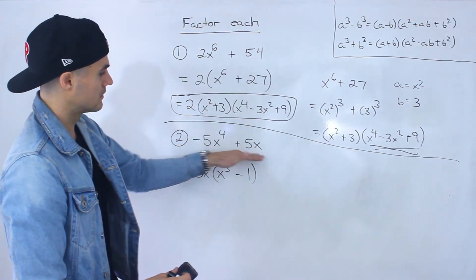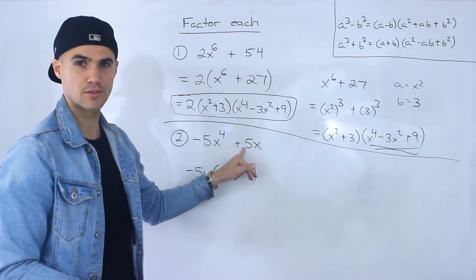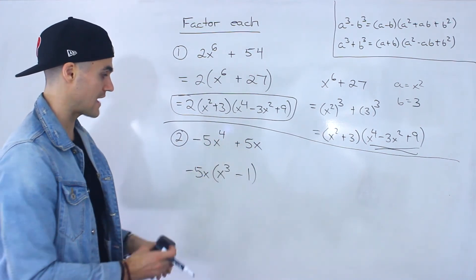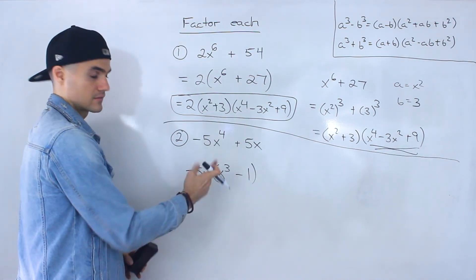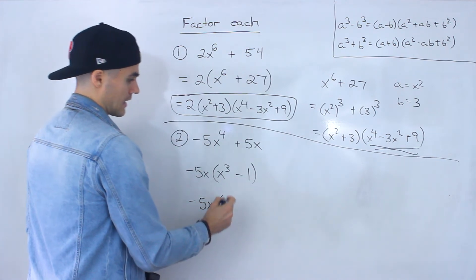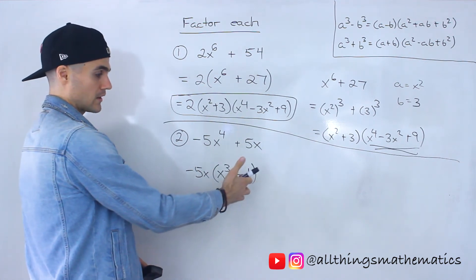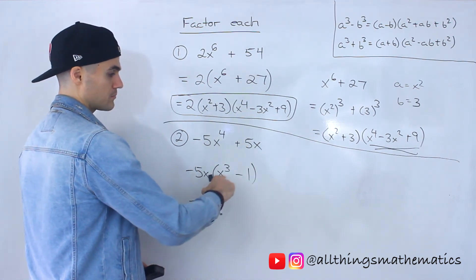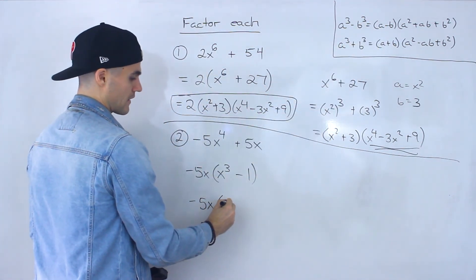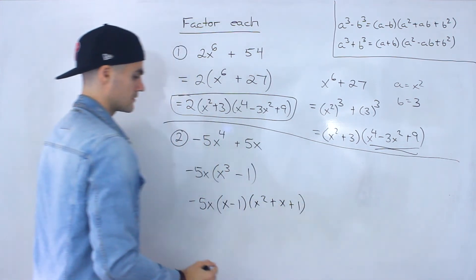So notice from here, we couldn't really take this and write it in these formats because we can't take the third root of 5. But notice when we do factor out the 5 and we factor out one of the x's, we end up having a difference of cubes. So we'd end up with negative 5x. And then this here, the a value would be x, the b value would be 1. This one we can rewrite as 1 to the power of 3. So if we plug in those a and b values into this formula, this would factor into x minus 1, x squared plus x plus 1.